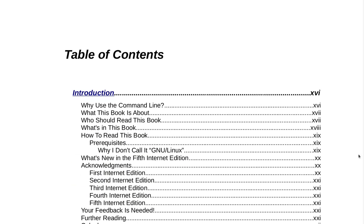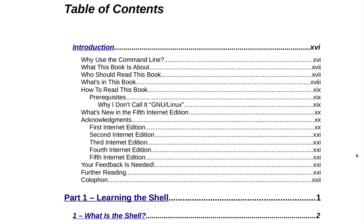Table of Contents: the Introduction at Roman numeral 16. That covers: why use the command line, what this book is about, who should read this book, what's in this book, how to read this book, prerequisites, why not call it GNU Linux, what's new in the 5th Internet Edition, acknowledgements for editions 1 through 5, your feedback is needed, further reading, and a colophon at Roman numeral 22.